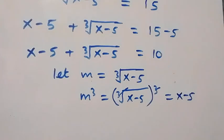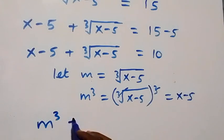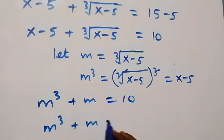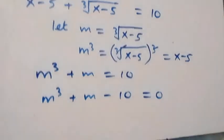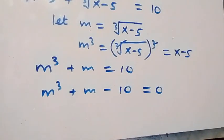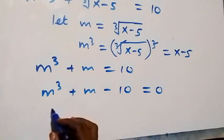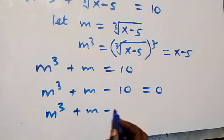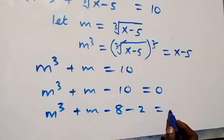With this substitution, the equation becomes m cubed plus m equals 10. Taking 10 to the other side, we have m cubed plus m minus 10 equals 0. We can write minus 10 as minus 8 minus 2, giving us m cubed plus m minus 8 minus 2 equals 0.